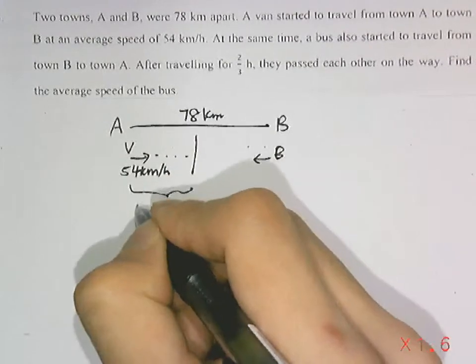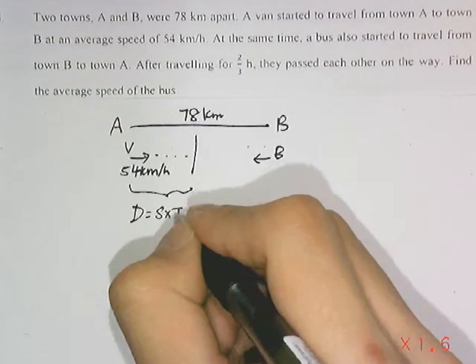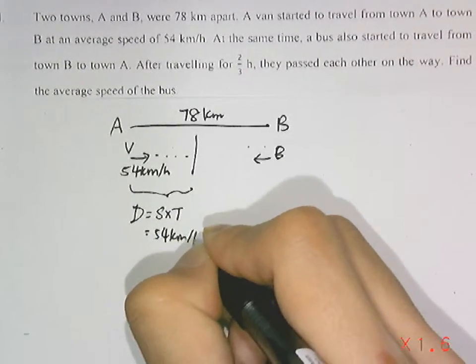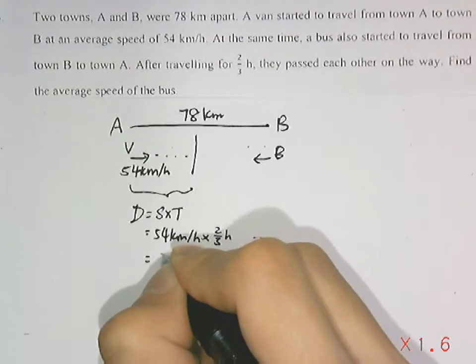For 2/3 hours we can find the distance traveled by the van. Speed times time: 54km per hour times 2/3 hours, which gives us 36km.